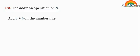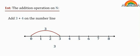To add 3 plus 4 on the number line, first move from 0 to 3. Then move again 4 steps to the left.